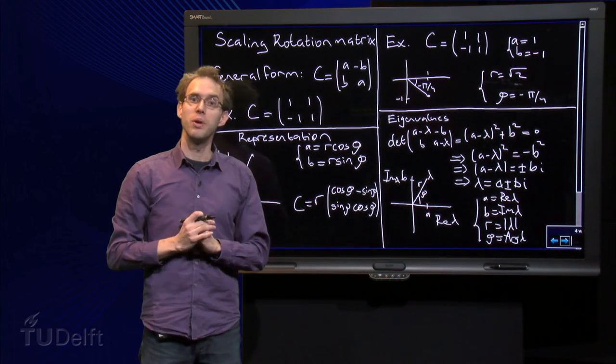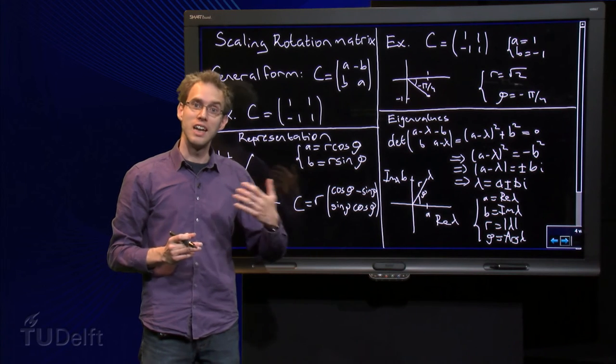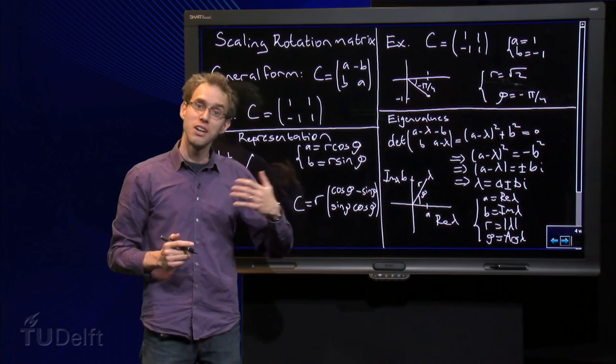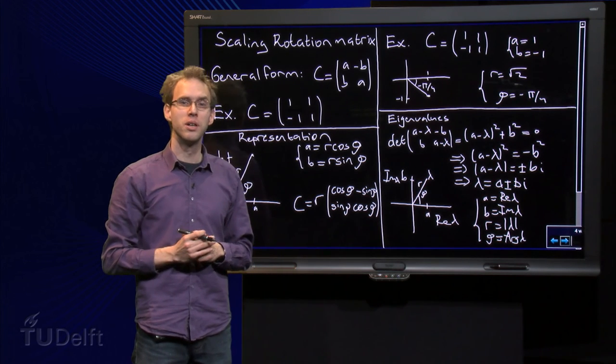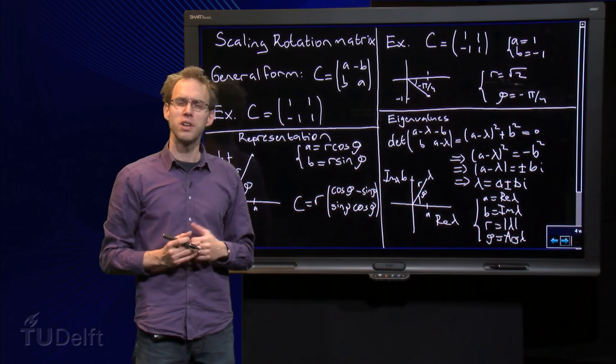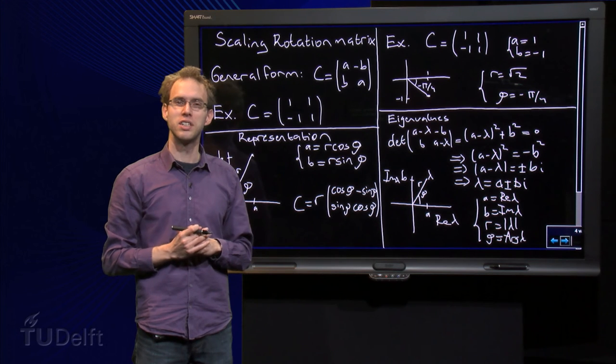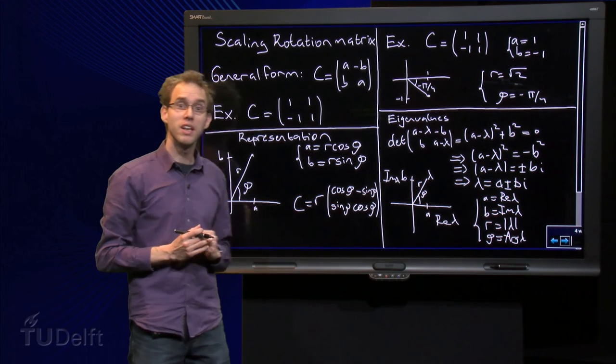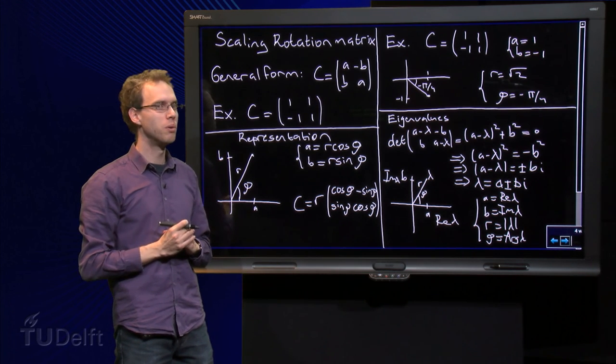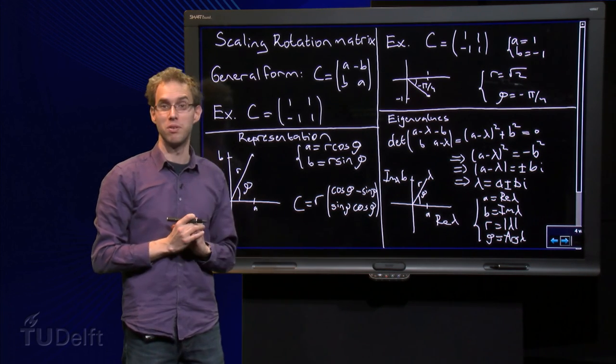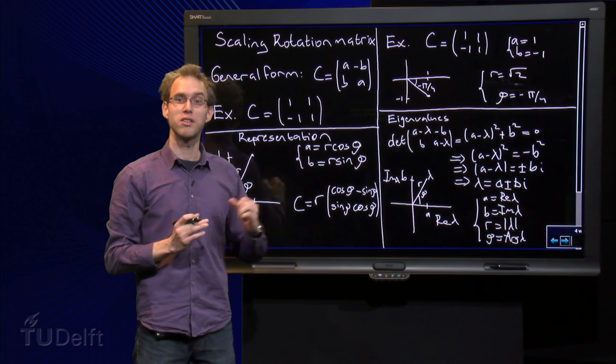So now we know what a scaling-rotation matrix does. A scaling-rotation matrix has complex eigenvalues. But wait—would every matrix with complex eigenvalues be a scaling-rotation matrix? Don't know yet, subject of a next video.